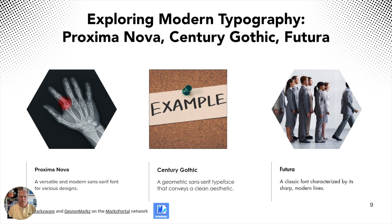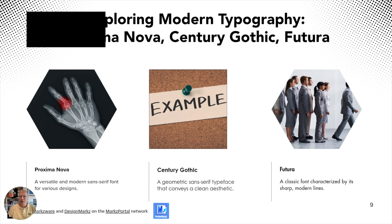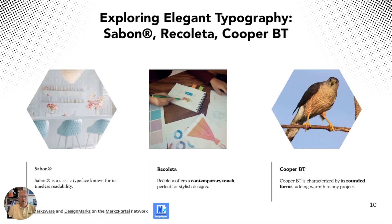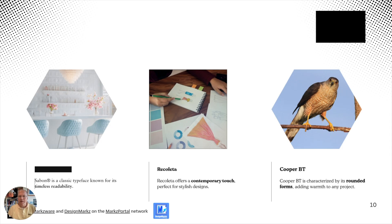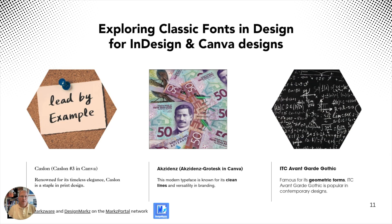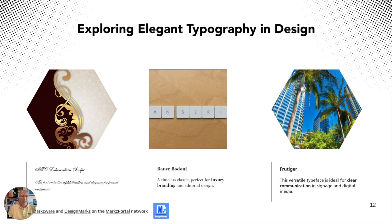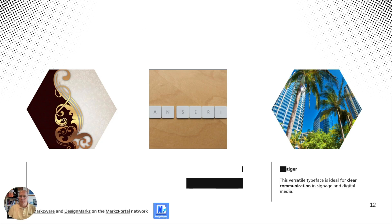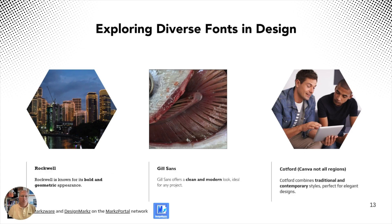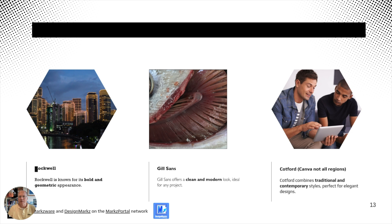Some more options include Futura — a favorite here at Markzware — Proxima Nova, Century Gothic, Sabon, Recoleta, and Cooper BT. Continuing on the list: Caslon, Acumin Grotesque in Canva — sometimes fonts have a slightly different name in Canva compared to InDesign, so be aware of that. We also get into some funkier ones: Frutiger, Rockwell, Gill Sans, and Cotford. Note that Cotford is not available in all Canva regions — another thing to pay attention to, since not all areas have the same fonts available due to licensing.